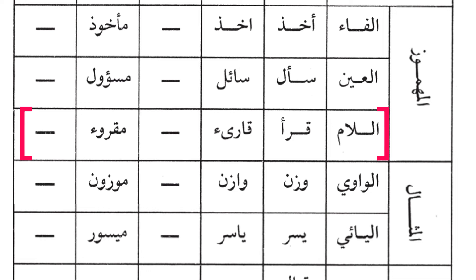The third type of al-mahmuz is the one which has its last letter carrying hamza. An example is the word 'qara'a' — you can see the last letter is hamza. 'Qara'a' means he read, he recited. 'Qari'un' means a reciter, a reader. And 'maqru'un' is the book that is being read.